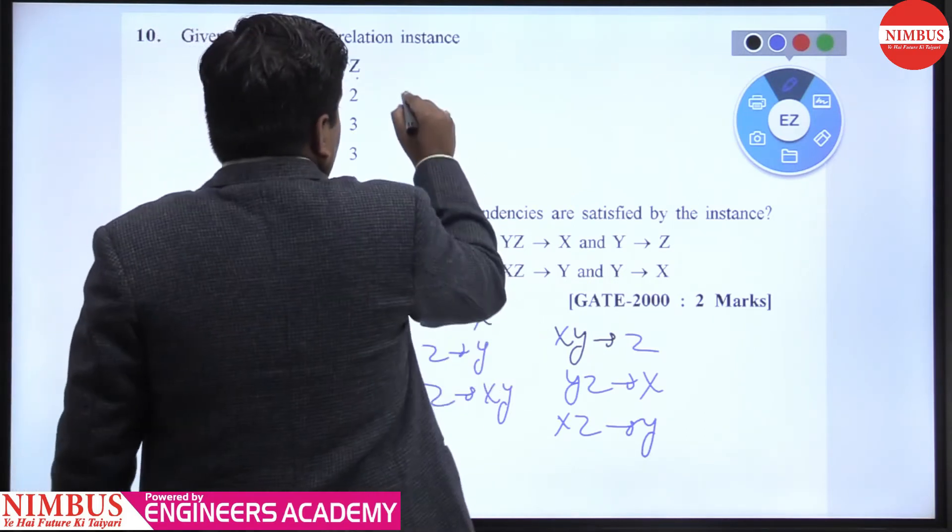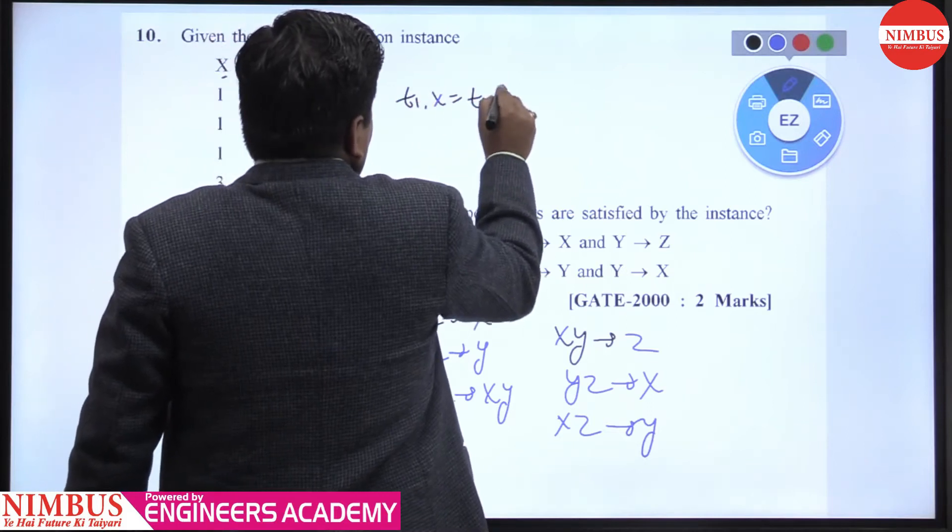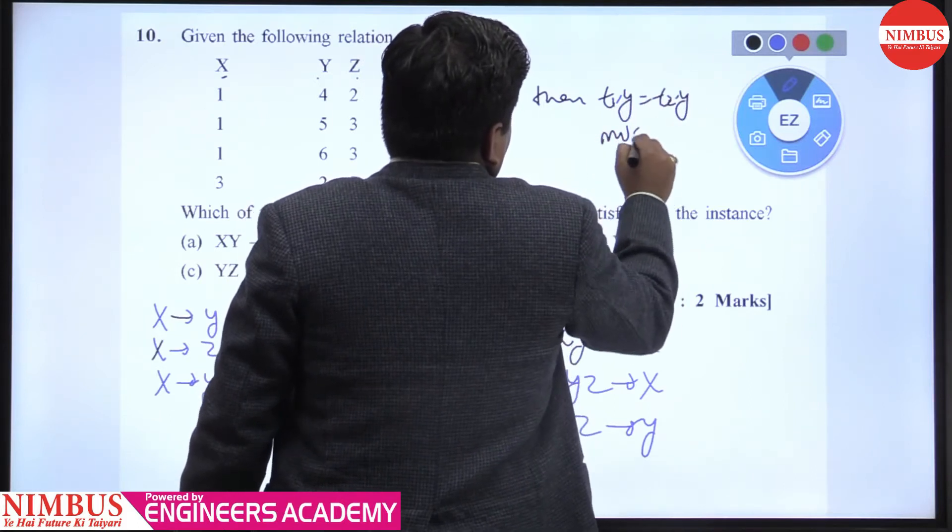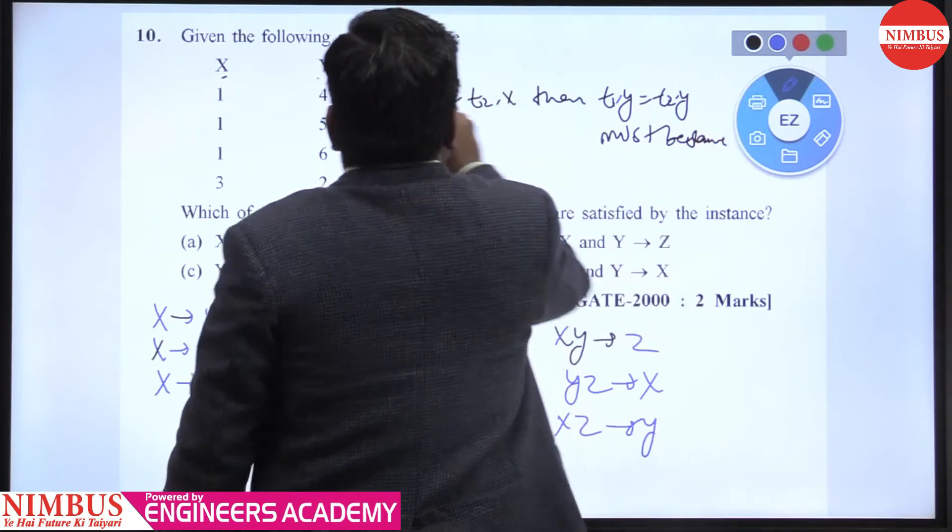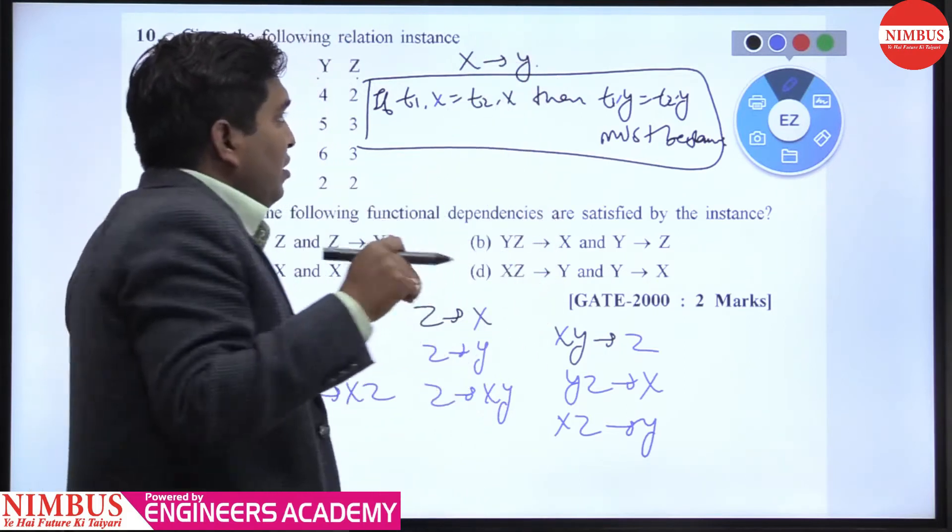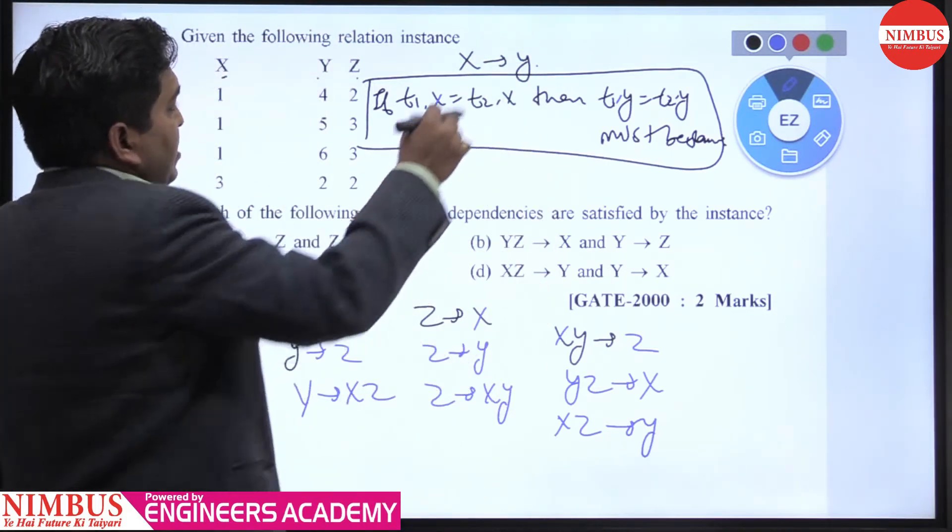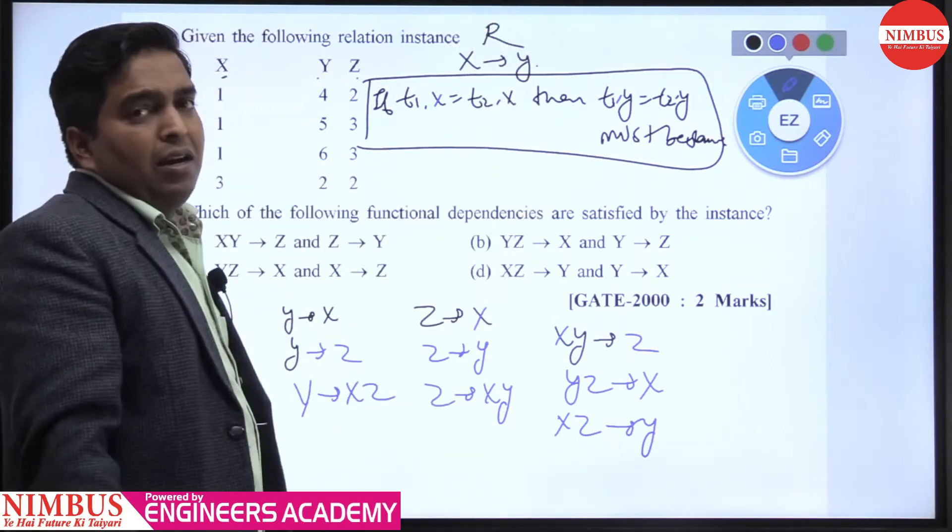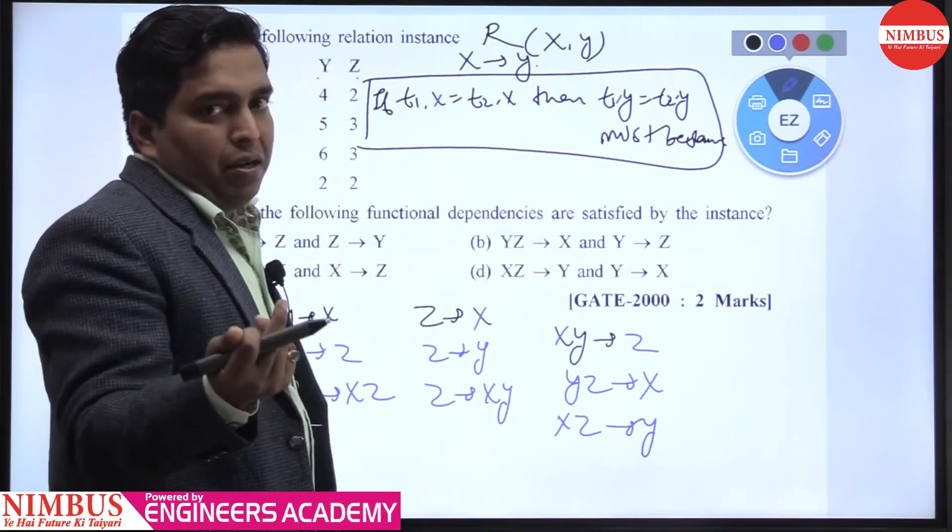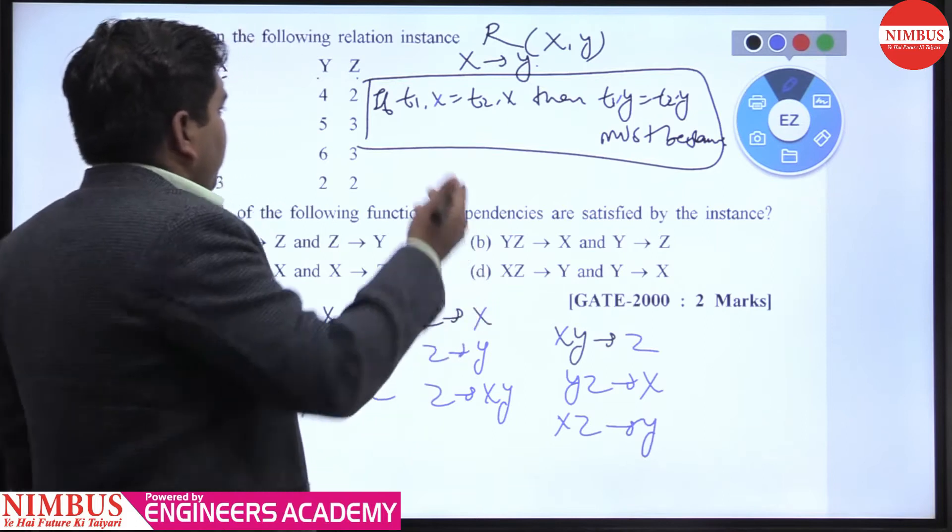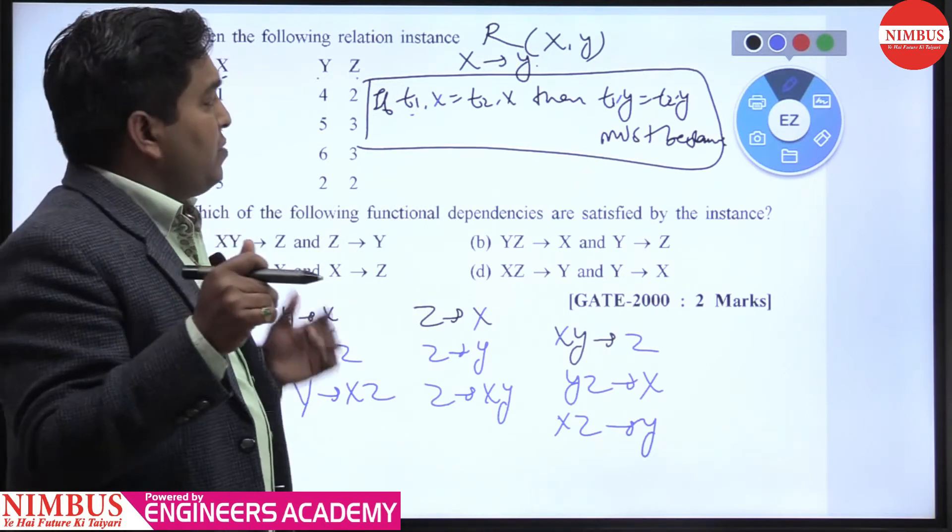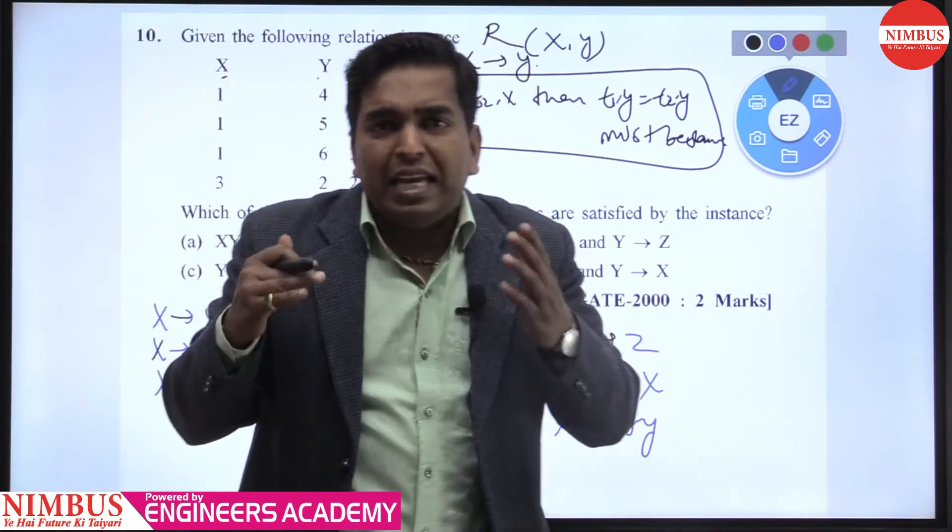But what is the FD definition? T1.X equals T2.X, then T1.Y equals T2.Y must be same if X→Y. I'll repeat: consider relational schema R. X and Y be the attribute set of R, and T1 and T2 any two tuples, such that if whenever T1.X equals T2.X, then T1.Y equals T2.Y must be same. You can easily identify: in X→Y, whenever X value repeats, corresponding Y value must be same.